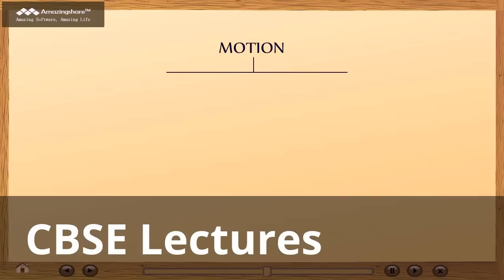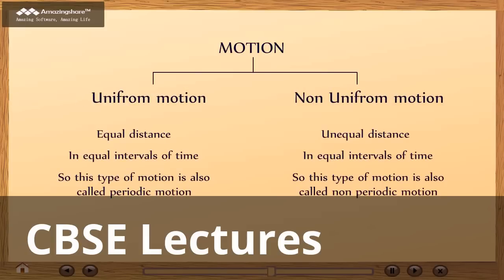Objects show uniform and non-uniform motion. Uniform motion: when an object covers equal distance in equal interval of time. This type of motion is called periodic motion.